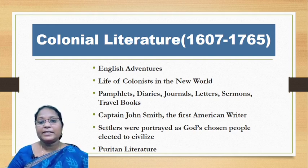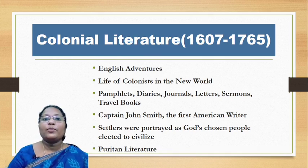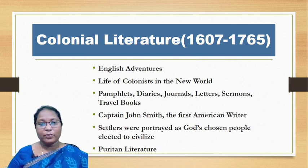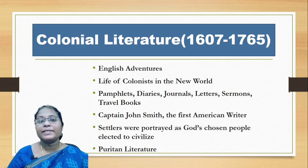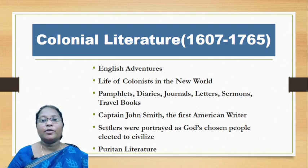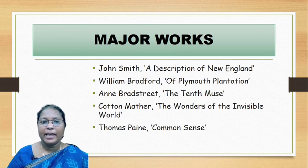In his writing, settlers were portrayed as God's chosen people elected to civilize. During colonial literature, Puritan literature also came into the limelight, because the main reason for Europeans to settle in America was due to three reasons: economic, political, and religious. Major works during this period include John Smith's 'A Description of New England,' William Bradford's 'Of Plymouth Plantation,' Anne Bradstreet's 'The Tenth Muse,' Cotton Mather's 'Wonders of the Invisible World,' and Thomas Paine's 'Common Sense.'